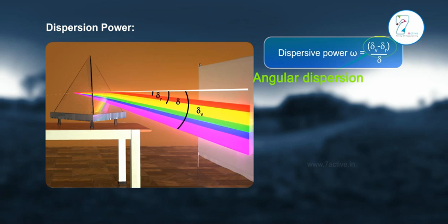Where δᵥ - δᵣ stands for angular dispersion, and δ stands for angular deviation for yellow color, i.e., mean deviation.